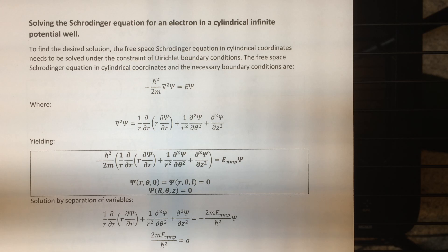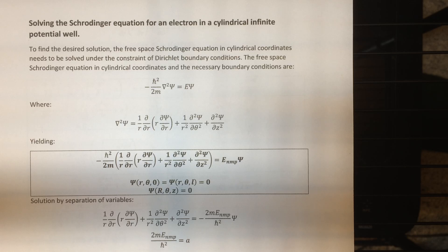In this video, I'm going to show you how to solve the Schrödinger equation in a cylindrical infinite potential well. First, I'm going to tell you what an infinite potential well is. It's a specific type of potential function in quantum mechanics — a piecewise defined function that has an infinite value everywhere in 3-space except for some finite volume closed-off cavity where it's zero inside.